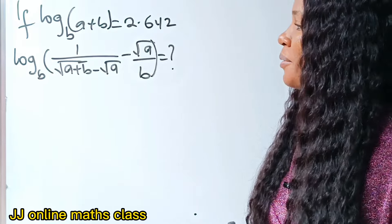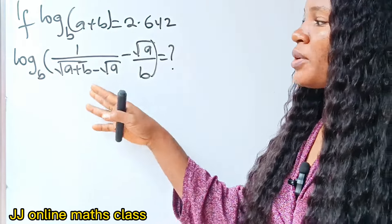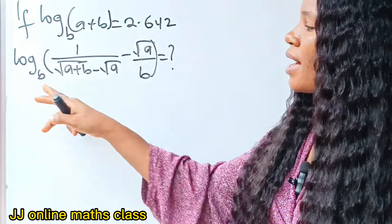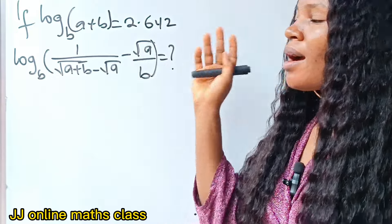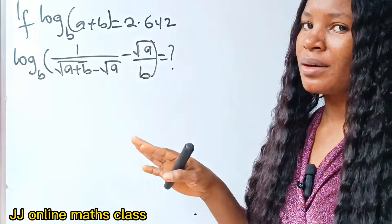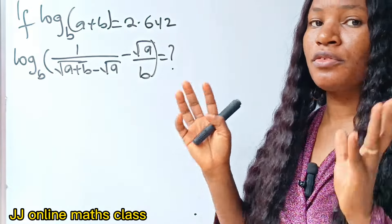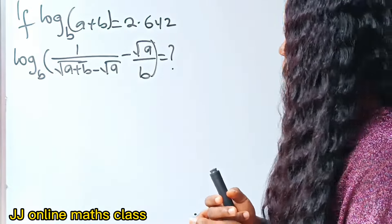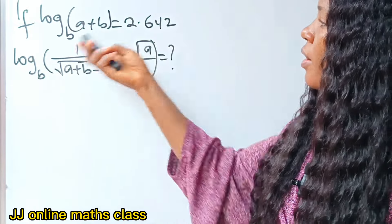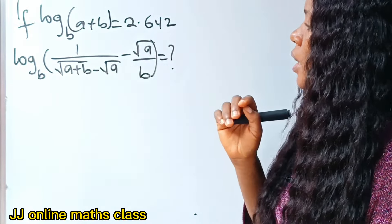Welcome to my channel. Let's solve this, but there's a condition attached: A and B are positive real numbers. A and B are positive real numbers. We are asked to solve for the value of A and B.